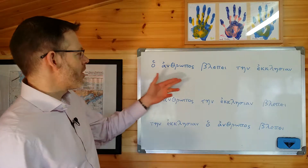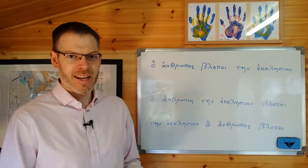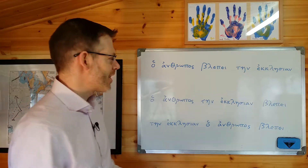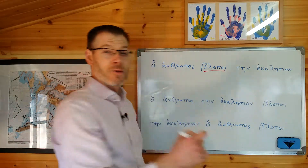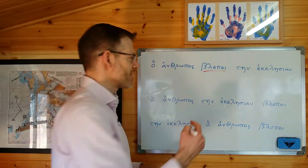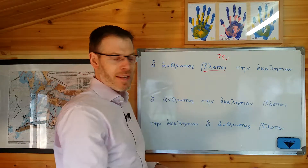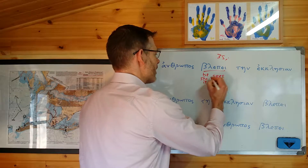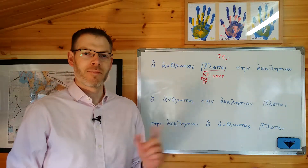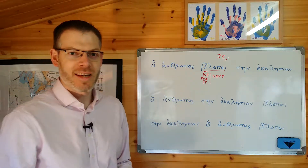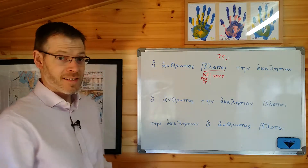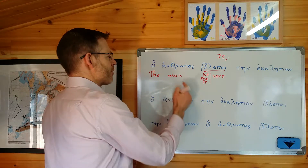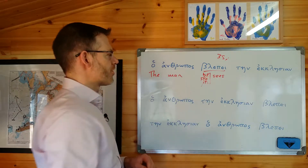So first up, here it is: ho anthropos, blepei ten ekklesian. Take a moment, press pause, see if you can translate that. What you're going to do is find the verb. The verb is blepei from blepō. It's the third person singular of blepō, meaning 'I see,' so that is 'he, she, or it sees.' That's the verb. For the subject, you want a noun in the nominative. Where's the noun in the nominative? Ho anthropos — that's 'the man.' That's the subject of the verb, so the man is the one doing the seeing.